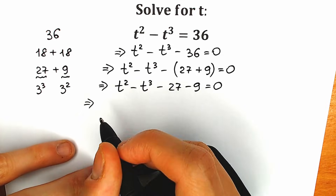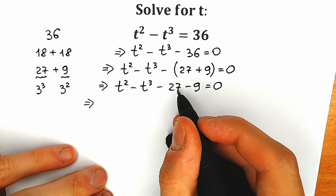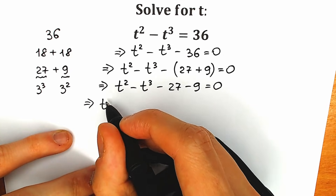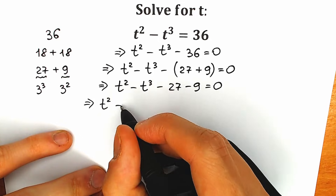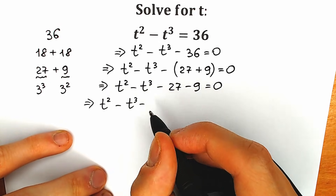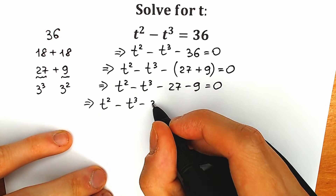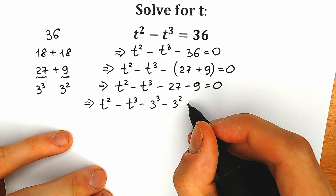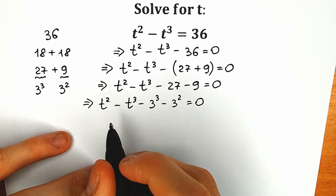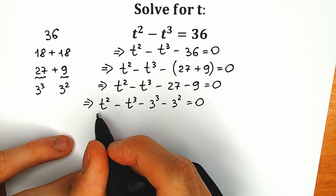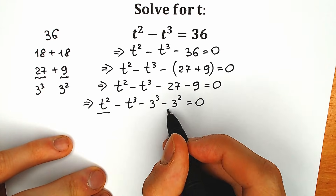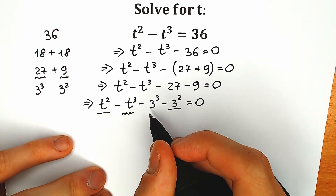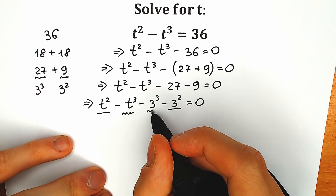Let's group it right now. Instead of 27, let's write 3 cubed. So we have t squared minus t cubed minus 3 cubed and minus 3 squared, equal to zero. We want to group t squared with 3 squared, and t cubed with 3 cubed.